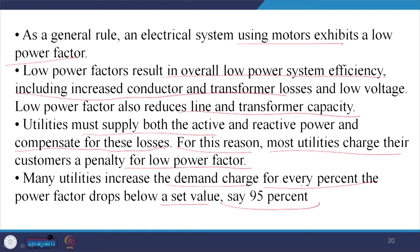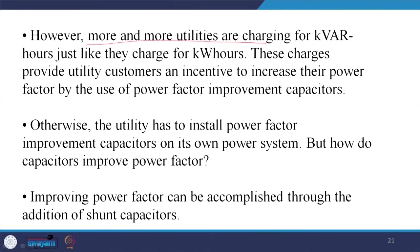This is part of the standard discussed in a different class. If the standard is not met, the utility can penalize consumers, or if the utility does not provide quality power, consumers can take legal action against them. More and more utilities are charging for kVAR hours just like kilowatt hours. These charges provide utility customers an incentive to increase their power factor using power factor improvement capacitors or other means. Otherwise, the utility has to install its own power factor improvement capacitors. Improving power factor can be accomplished through the addition of shunt capacitance.